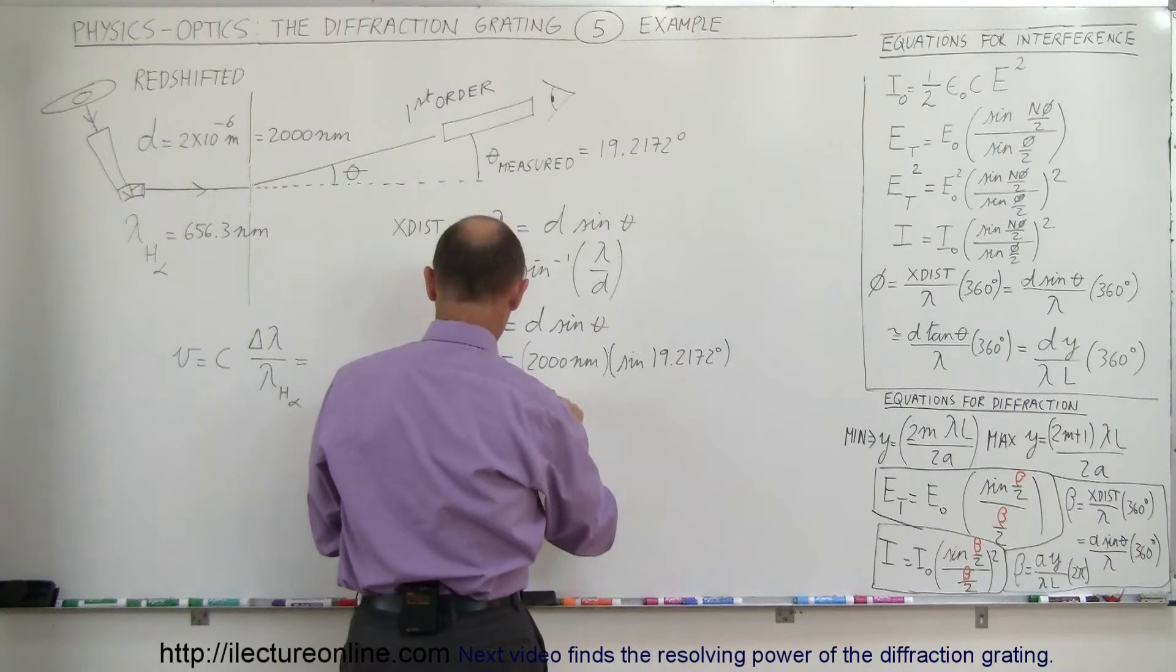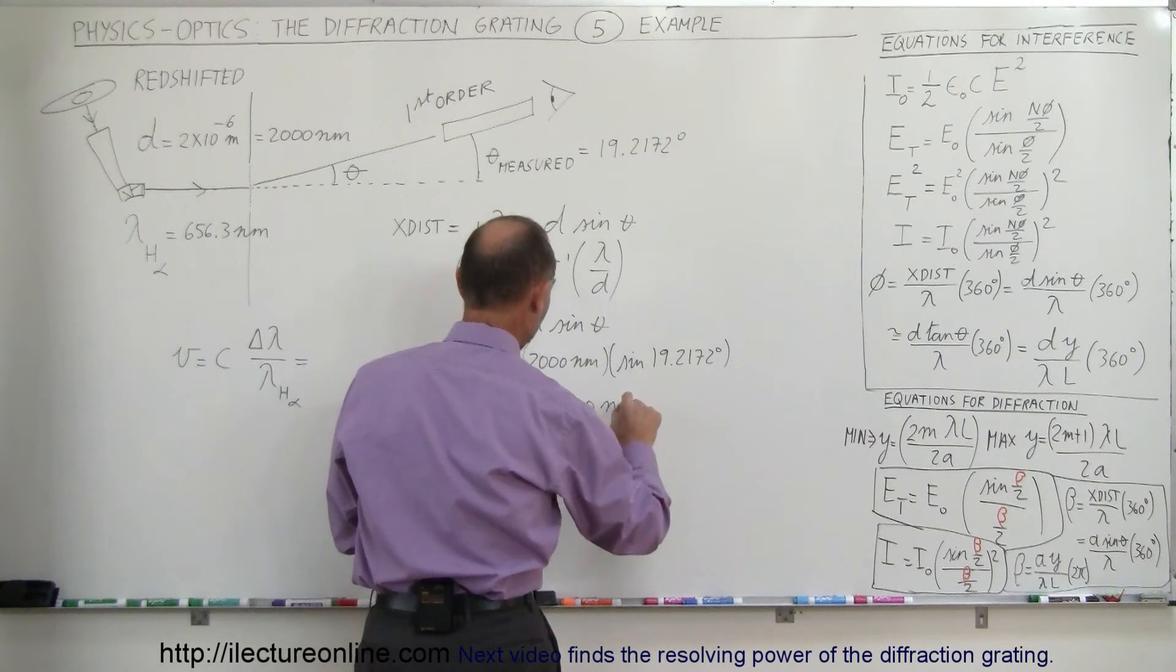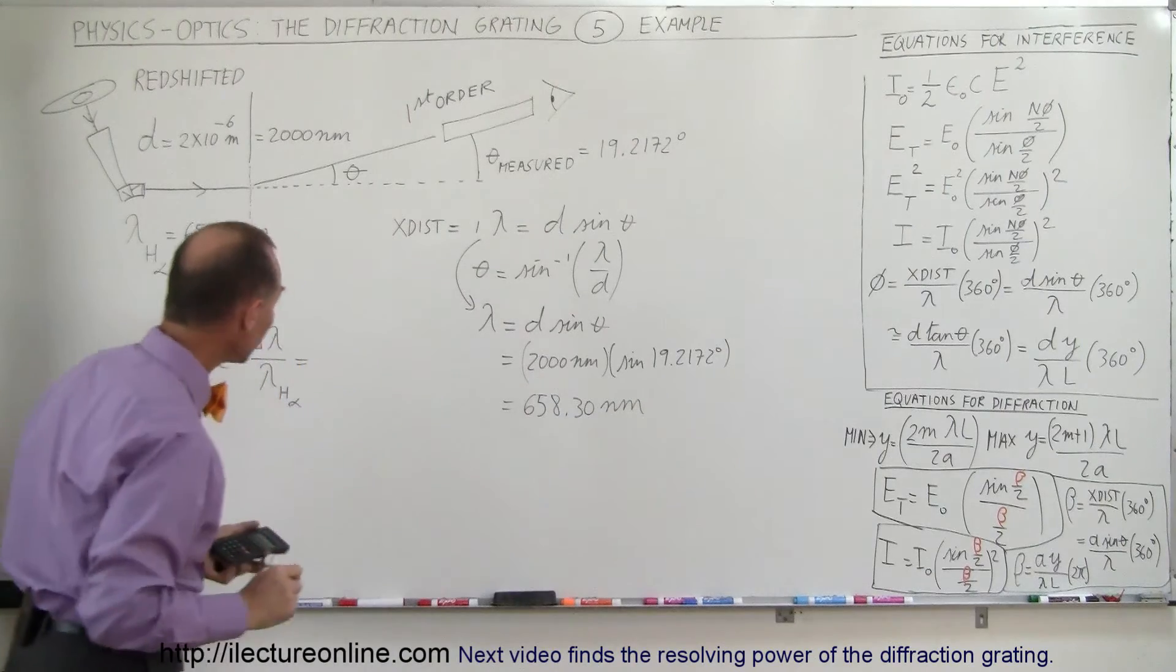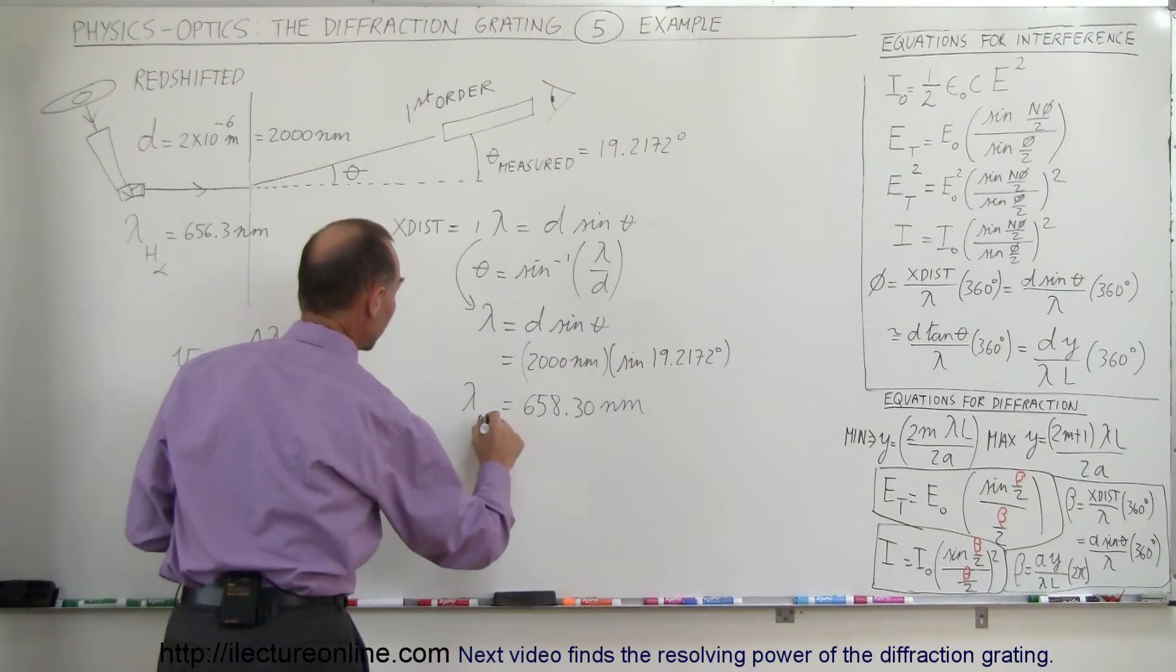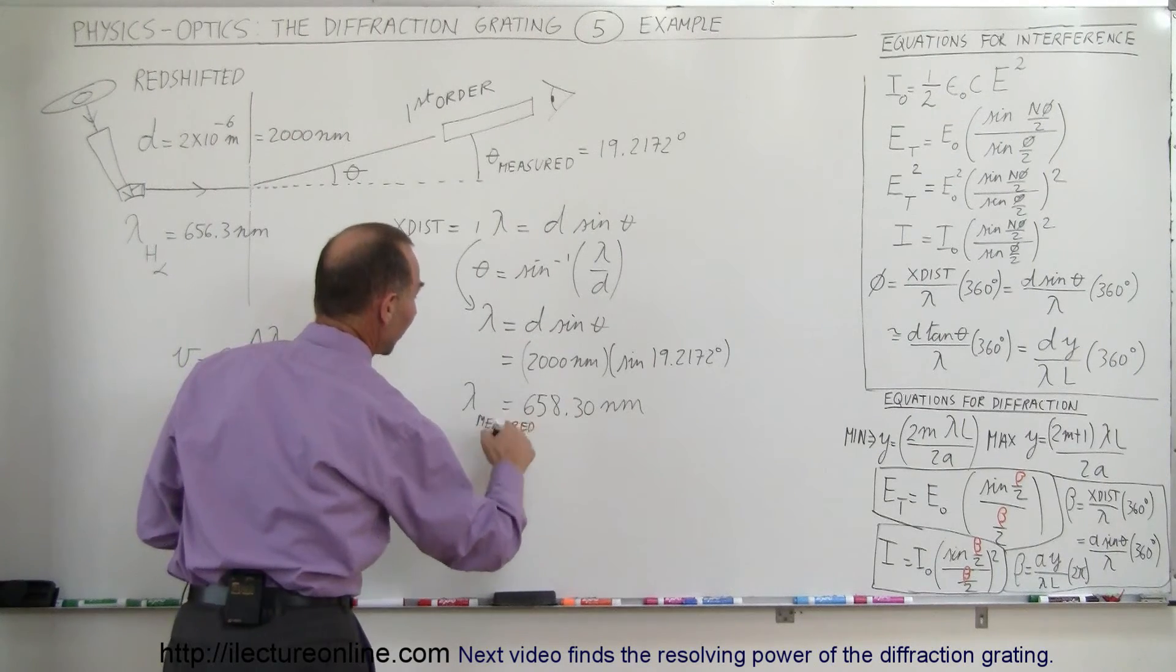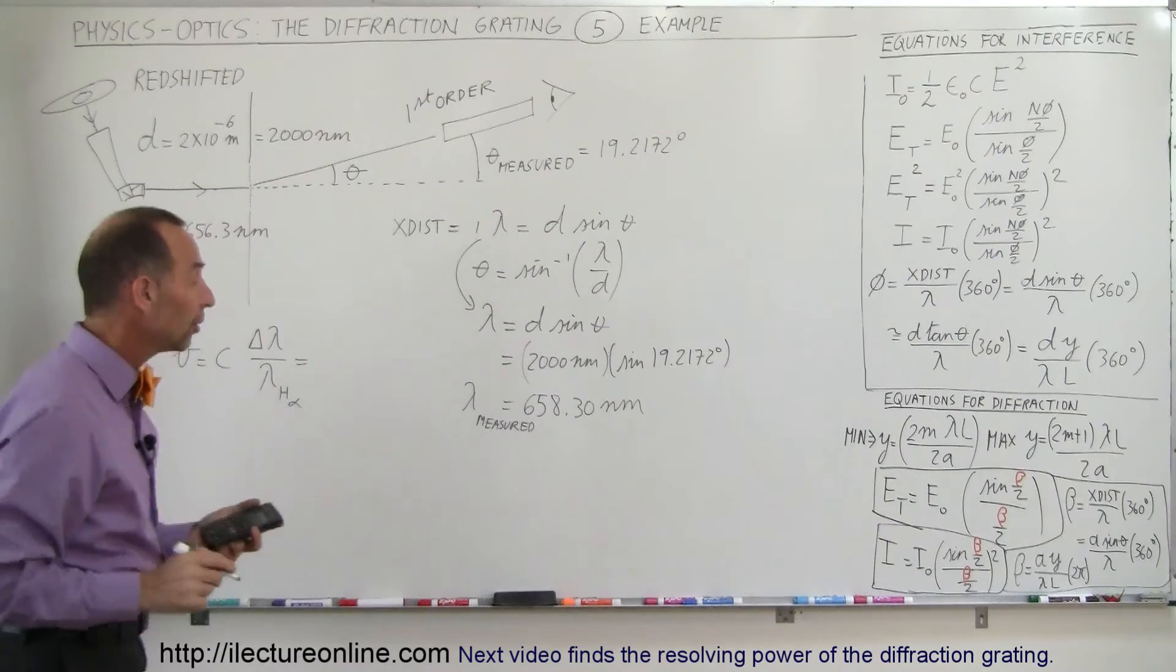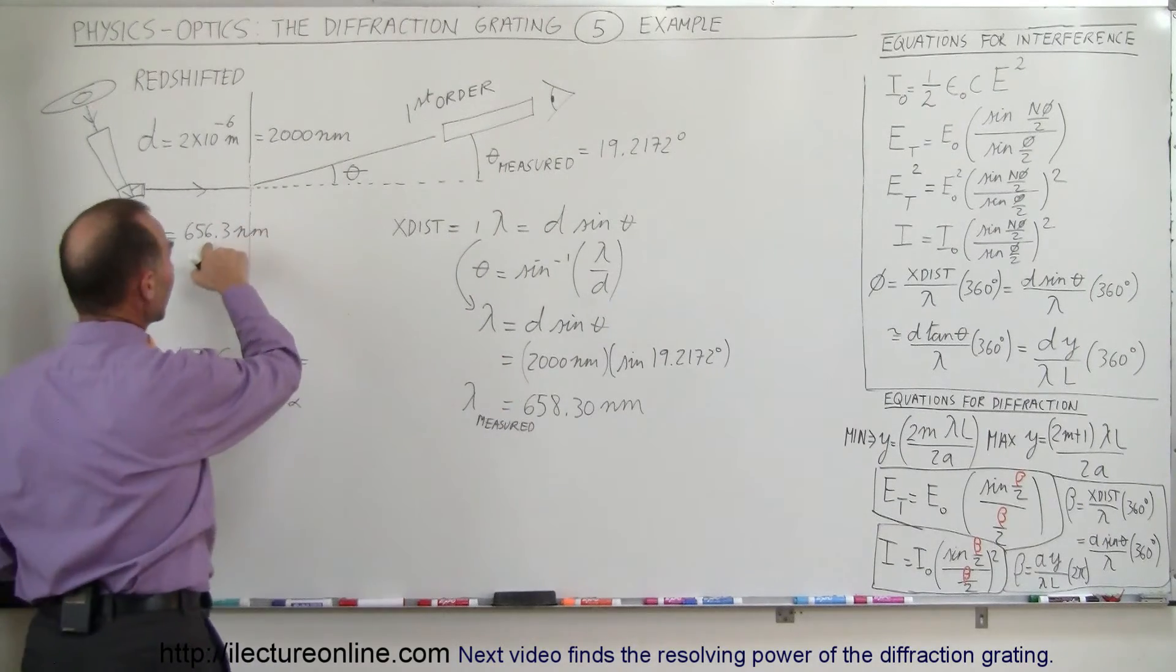So we get 658.30 nanometers. We know that this is the lambda measured, or at least that's the wavelength based on the measured angle. And so we can then see that it has shifted by 2 nanometers.